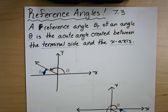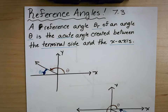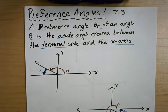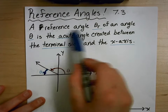Today we're going to be talking about section 7.3, which is discovering reference angles. It's not just going to be about reference angles — it's going to be how we use them in solving trigonometric equations and how you use them in inverse trig functions. So let's get started with the definition.